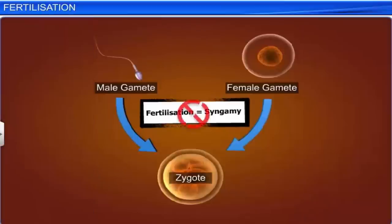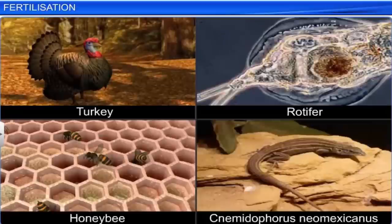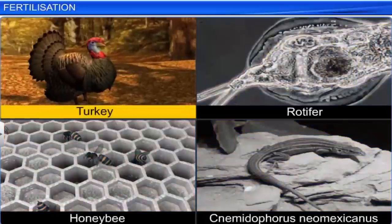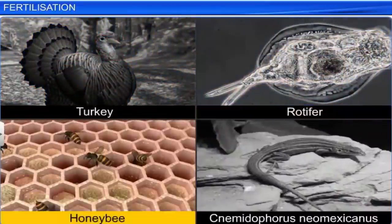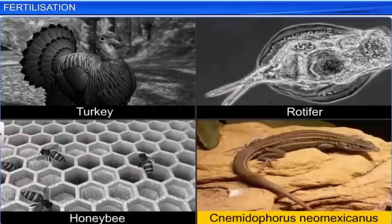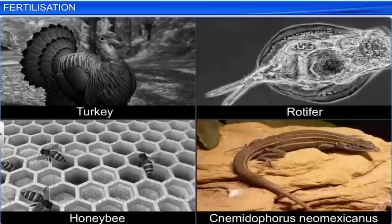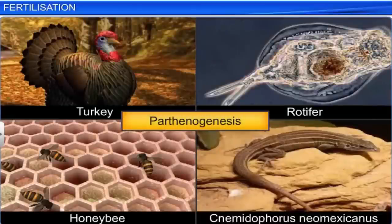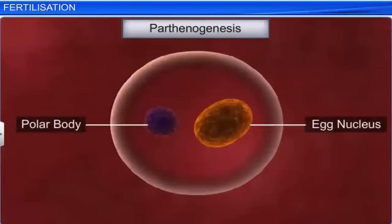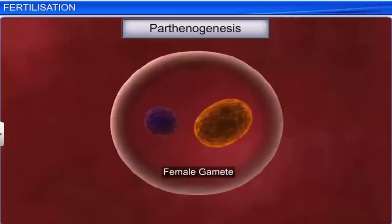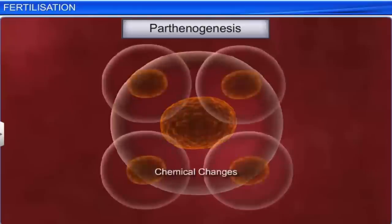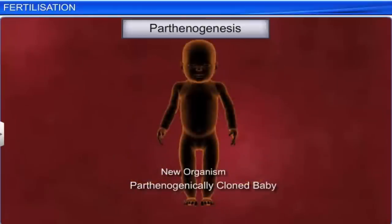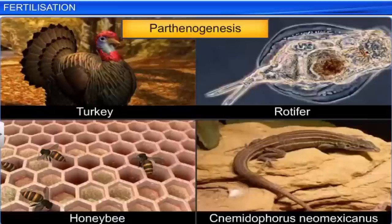Interestingly, fertilization does not occur in every sexually reproducing organism. In certain organisms such as turkey, rotifers, honey bees, and even some lizards such as Cnemidophorus neomexicanus, a process called parthenogenesis takes place. In this process, the female gamete does not fuse with the male gamete, but undergoes developments such as cell division or chemical changes to form new organisms. Parthenogenesis, however, occurs only in a few organisms.